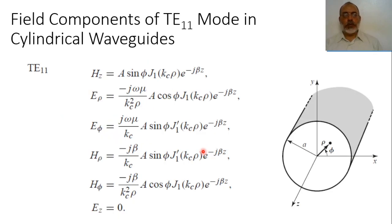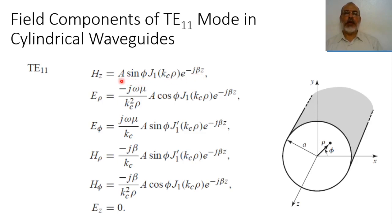For the case of TE11 mode, the field components of this dominant mode can be represented as Hz equal to A sin(φ) multiplied by Bessel function J1 of k_c ρ, times e to the power minus jβz. We assume that the dependence on φ is sin(φ) only, because the angle φ can be rotated at any angle, so we can represent it completely in terms of sine or completely in terms of cosine.